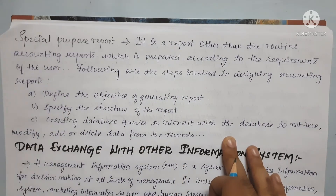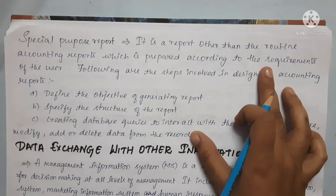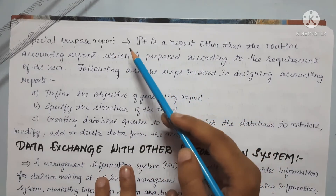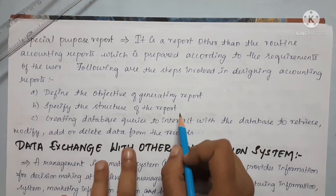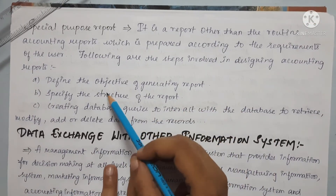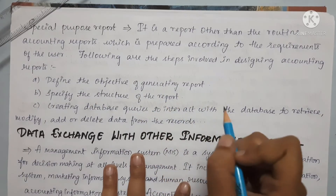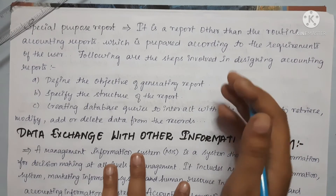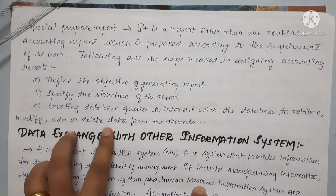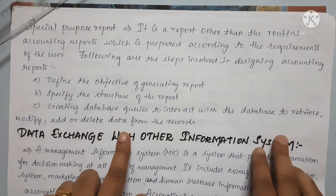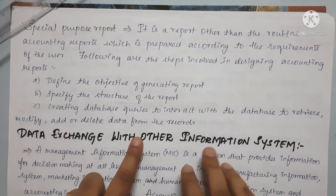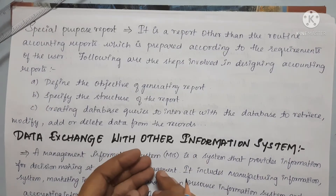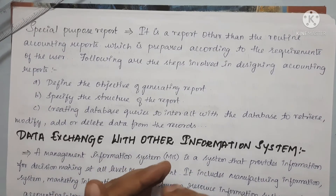Special purpose reports are reports other than the routine accounting reports, which are prepared according to the requirement of the user. The steps involved in designing accounting reports include: first, defining the objective and preparing the special purpose report; next, preparing the structure of the report; then creating data queries to interact with the database to retrieve, modify, add, or delete data from the report.